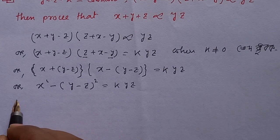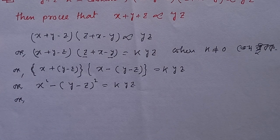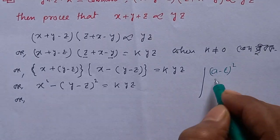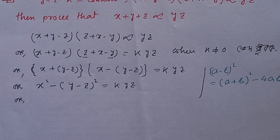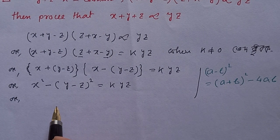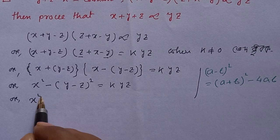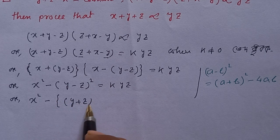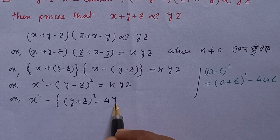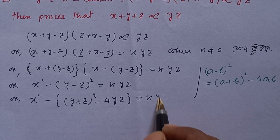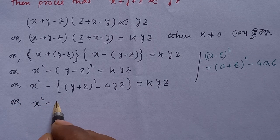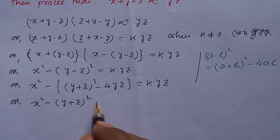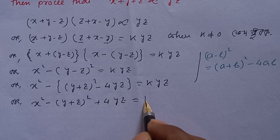We use the identity a minus b whole squared equals a plus b whole squared minus 4ab. So x squared minus y plus z whole squared minus 4yz equals k·yz, which gives x squared minus y plus z whole squared equals k·yz plus 4yz.